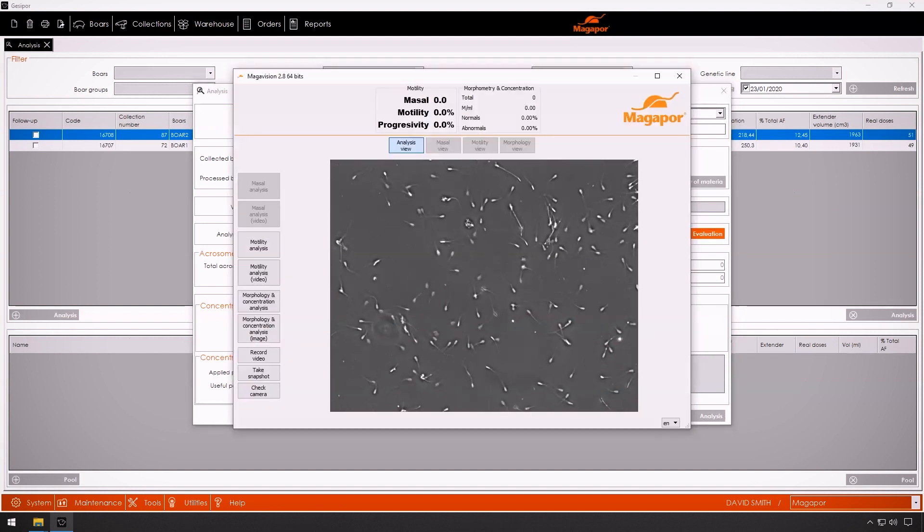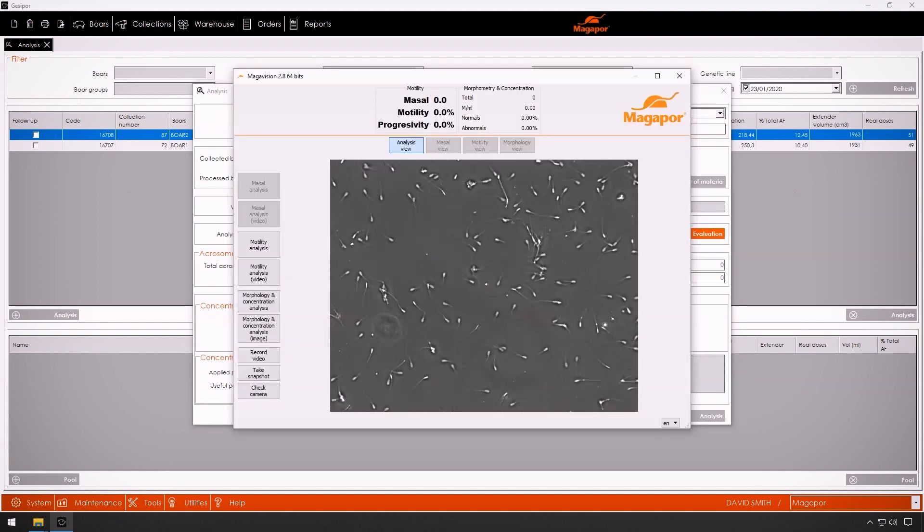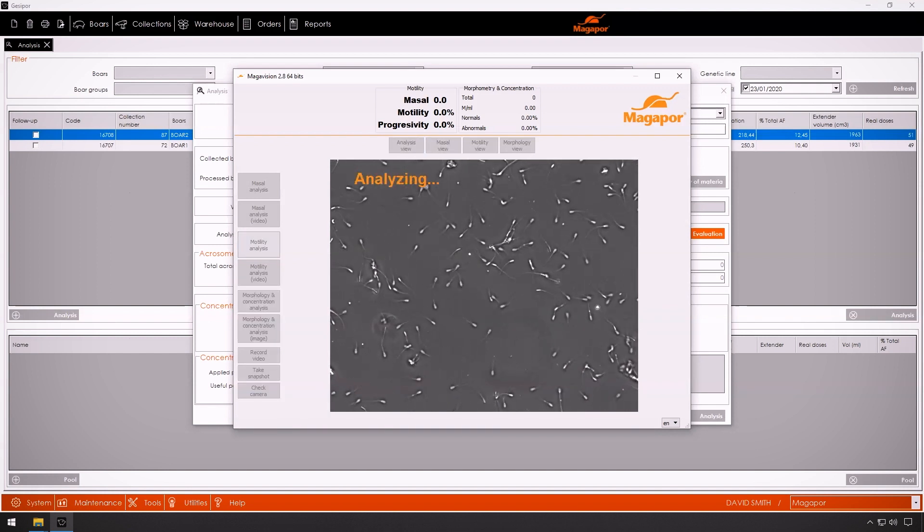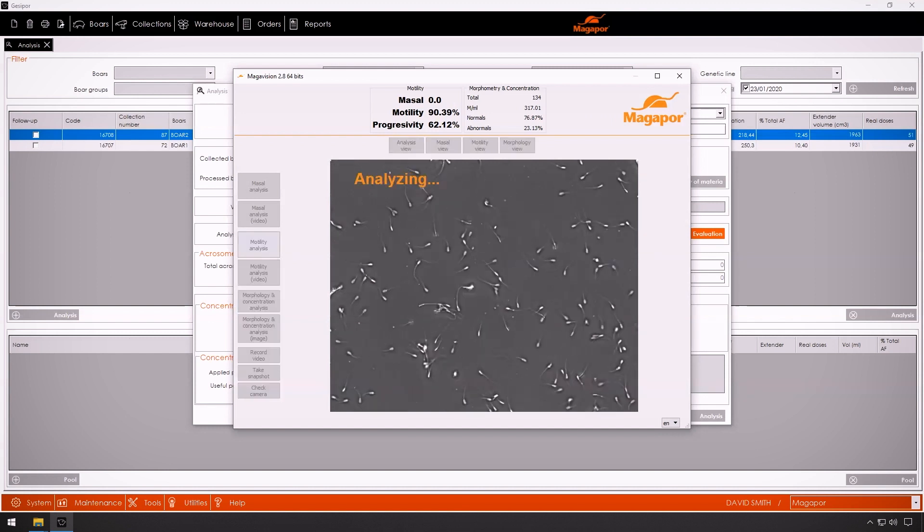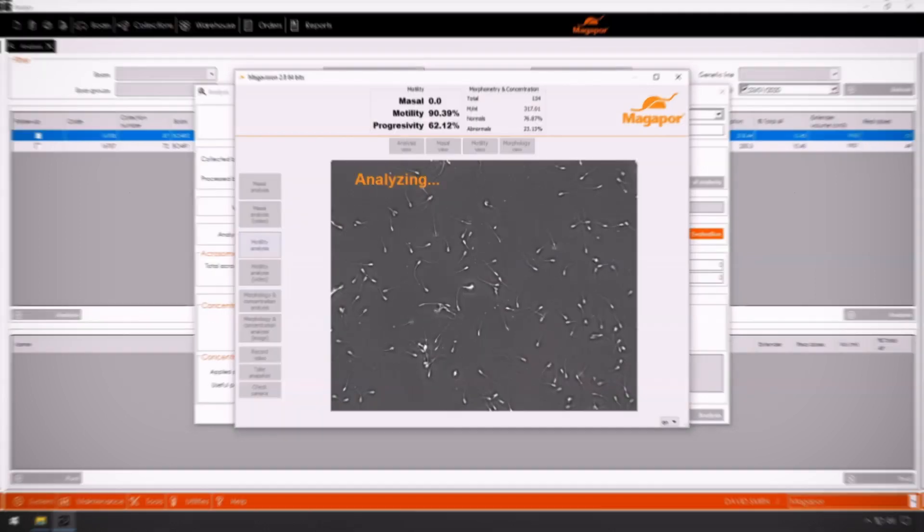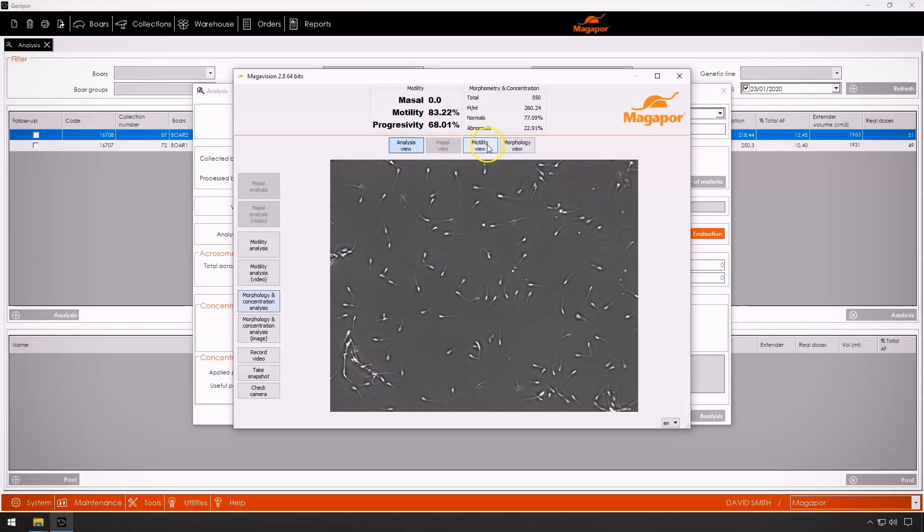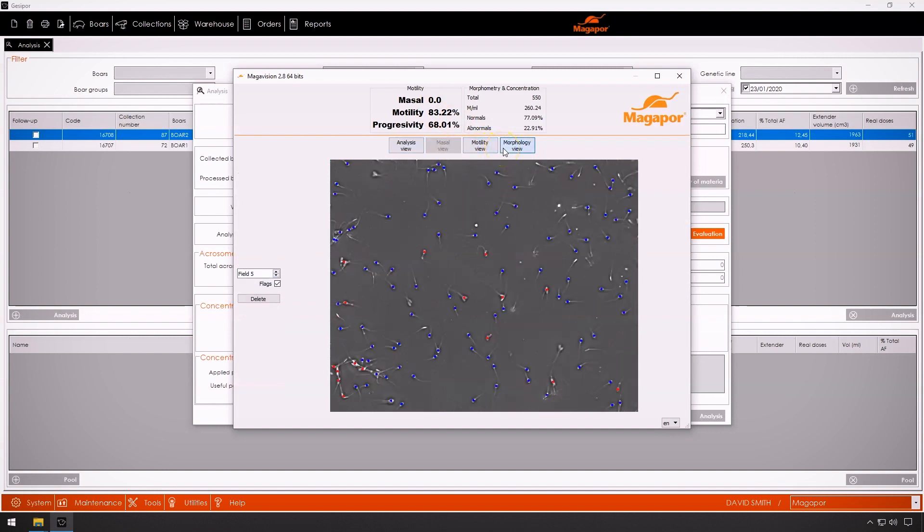This analysis can be carried out using the computer keyboard, capturing five fields or 500 sperm cells to analyze its total and progressive motility, concentration, and morpho anomalies. Magavision identifies sperm with a different color code depending on whether they are motile or not, normal or abnormal.